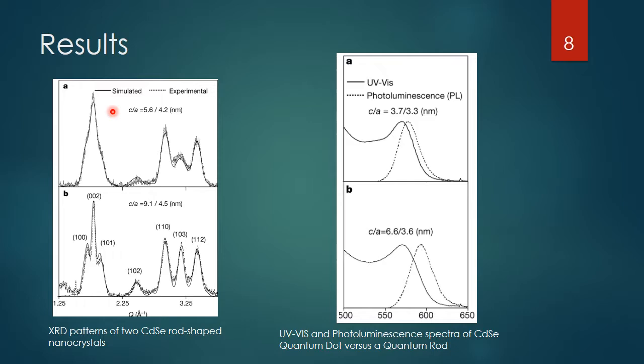Between these two spectra there is a pretty big difference in the X-ray diffraction. When the electrons are being shot into these nanocrystals, the electrons diffracting the X-rays have very different energies, which gives you the differences in peaks seen.